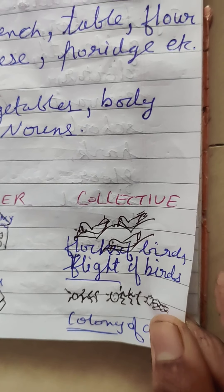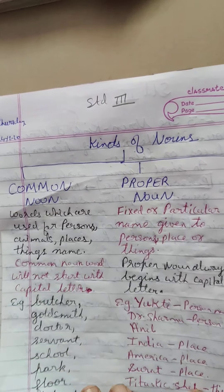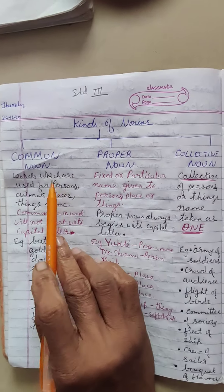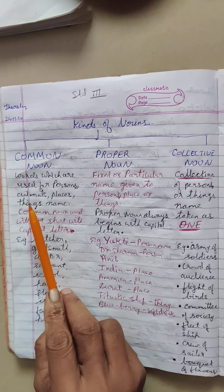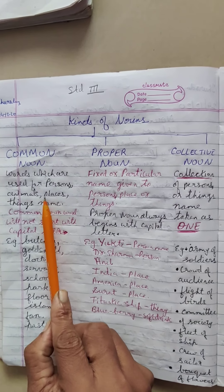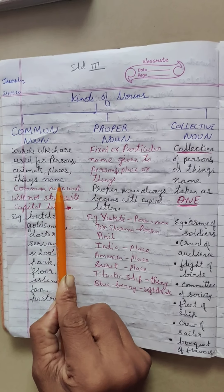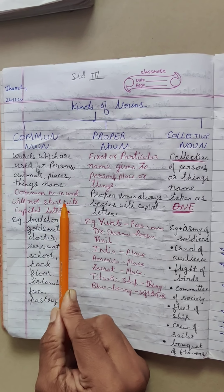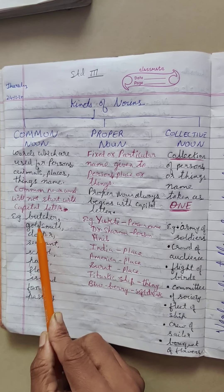Again, the kinds of nouns are: common noun, proper noun, and collective noun. Words which are used for persons, animals, places, things - these names are called common nouns. Common noun words will not start with a capital letter.